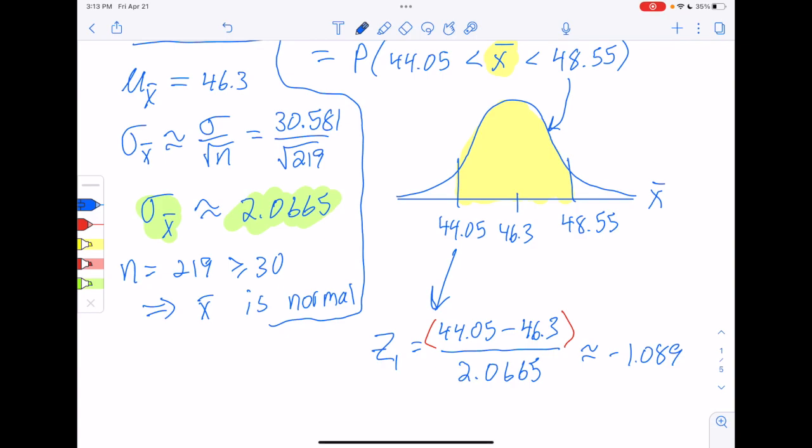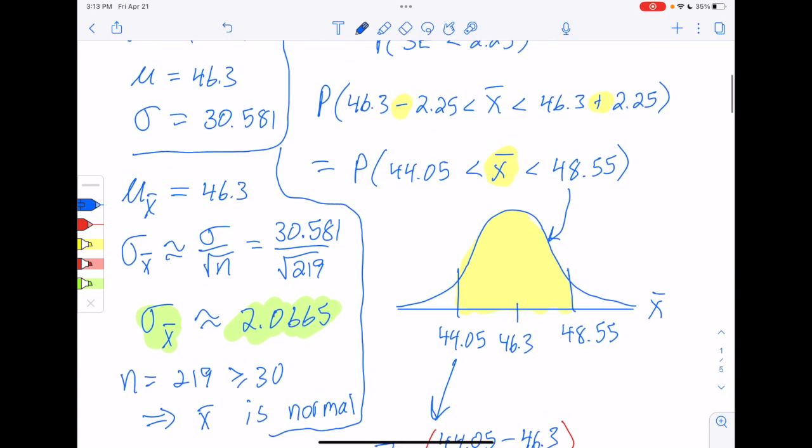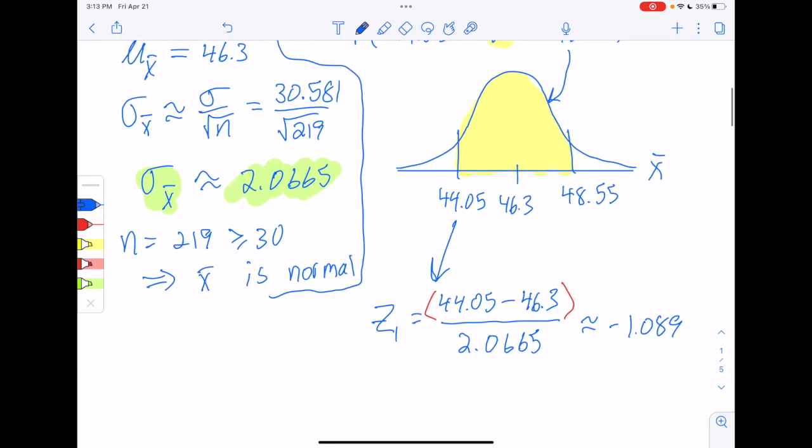And then when we set this up initially, we subtracted and added the same value from the mean. So when you do that, you have symmetry. And when you have symmetry, your z-score on the right has to be equal, but opposite to the z-score on the left. So this one's going to be 1.089 positive.